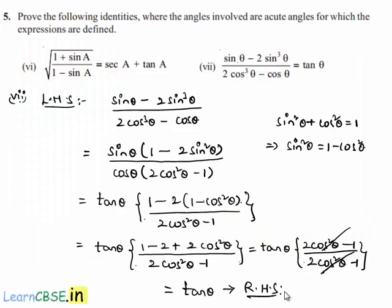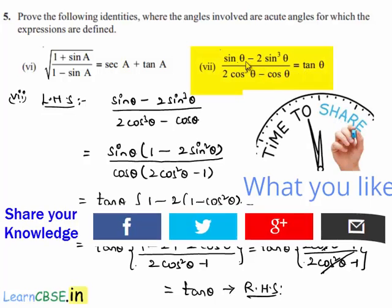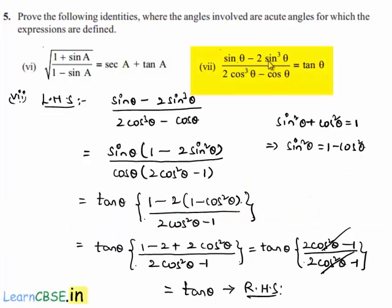Since LHS equals RHS, we can conclude that (sin θ - 2sin³ θ) / (2cos³ θ - cos θ) = tan θ.